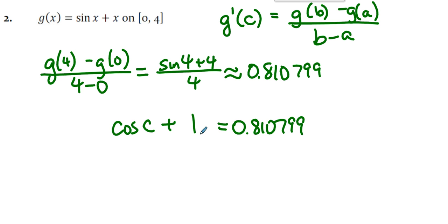And now there's a bunch of ways to solve this. You can put this in y1, this in y2, and see where they cross on that interval. You can kick the 1 over. That's negative 0.189201. And then undo the cosine. Either way, no matter how you slice it, the value of c on the interval that solves this is about 1.761.